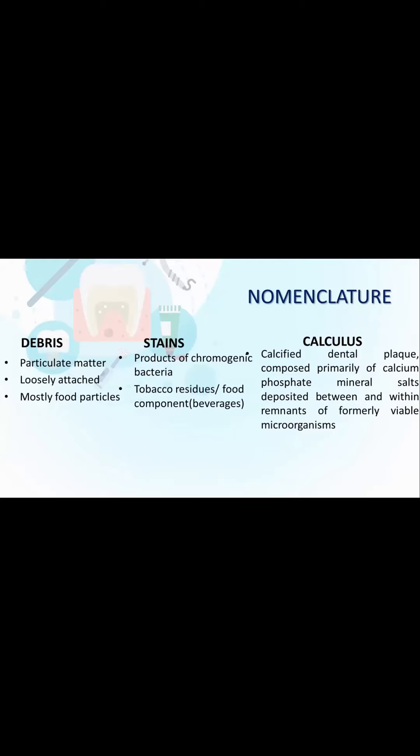The next are stains. These are products of chromogenic bacteria and can be either extrinsic or intrinsic depending upon the causative agent. They can be due to tobacco residues or food components like tea and coffee, which produce predominantly extrinsic stains recorded by this index. The next is calculus — a tenacious hard substance formed by calcification of dental plaque, composed primarily of calcium phosphate minerals, attached to the tooth surface and containing viable microorganisms.